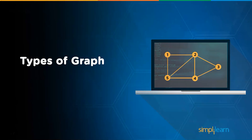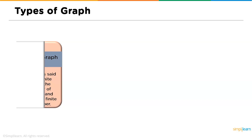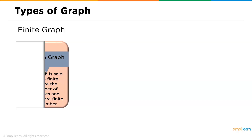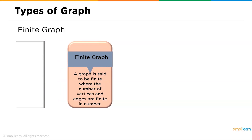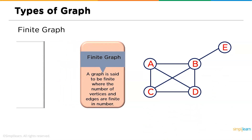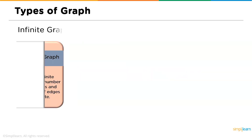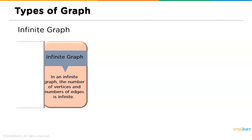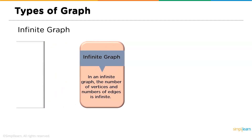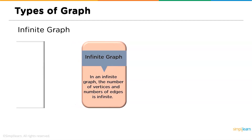Now we will discuss the different types of graphs. First we have the finite graph: a graph is said to be finite when the number of vertices and edges are a finite or countable number. Next is the infinite graph, which is the typical opposite of the finite graph — it does not have a countable number of edges and vertices.